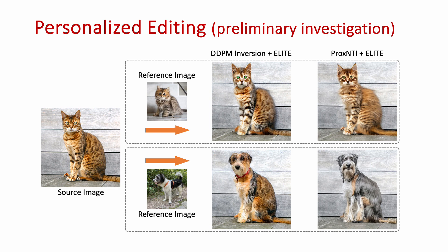Here's one more example. We see that in general, proximal null-text inversion framework gives better results than the DDPM inversion framework.